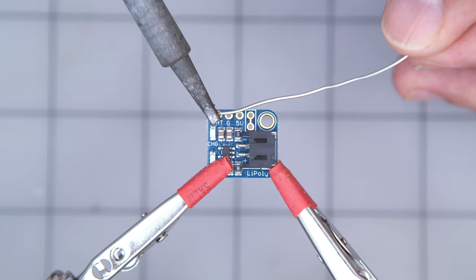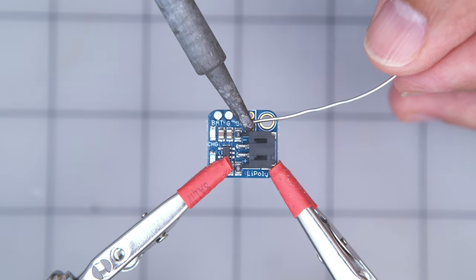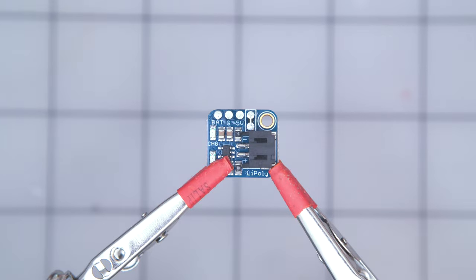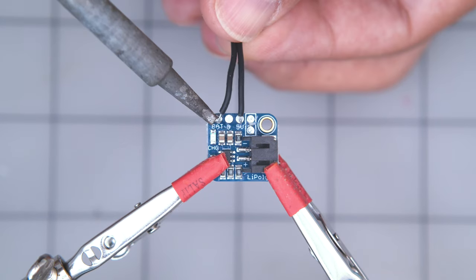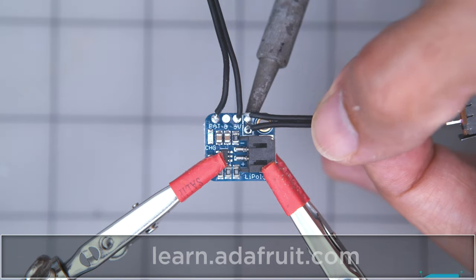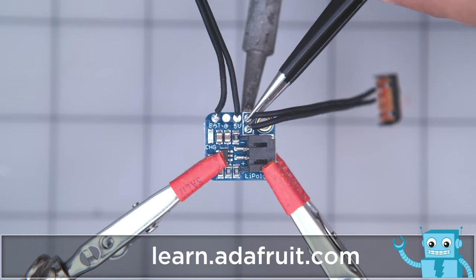The LiPo backpack is wired to an itsy bitsy board to allow the battery to be charged over USB. You can use flush diagonal snips to easily cut the trace to enable the pins for an on-off switch. Be sure to check out the learn guide for a full step-by-step tutorial on building this project.